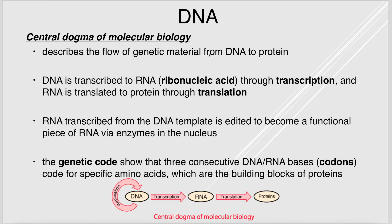The genetic code is the set of rules that determines how a particular sequence of DNA becomes protein. Three consecutive DNA or RNA bases — called codons — code for specific amino acids. When you put amino acids together, they become proteins.